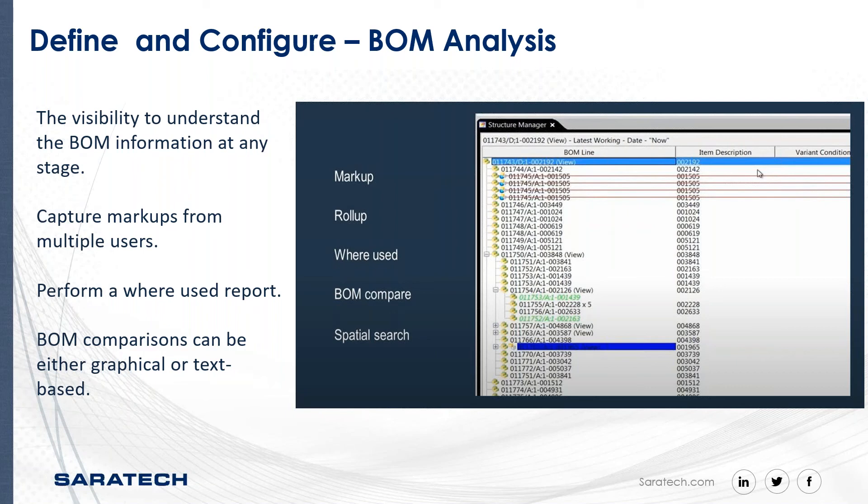And if you need to go back, if necessary. Spatial search is a unique search within TeamCenter that allows you to look at information based off of relative size, location, or the current part you have selected.